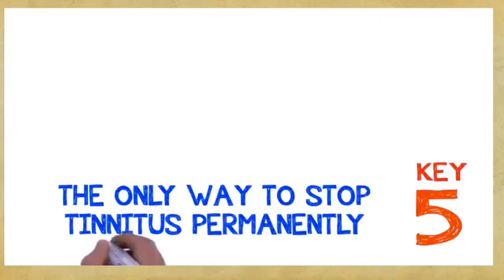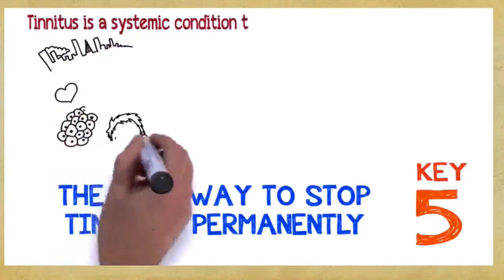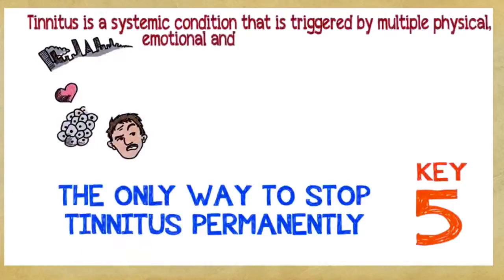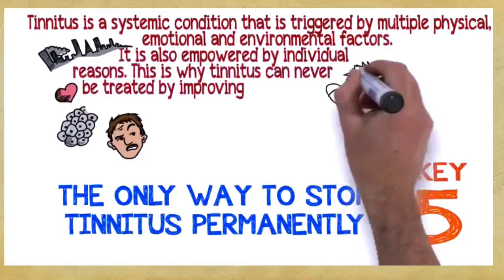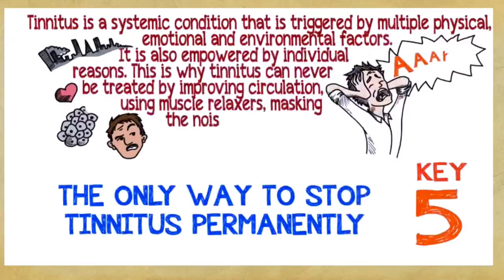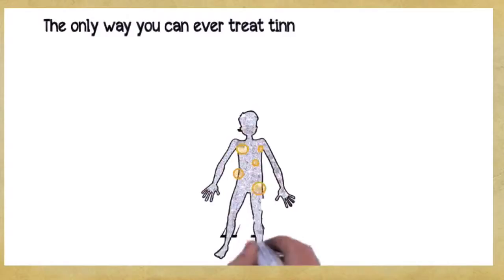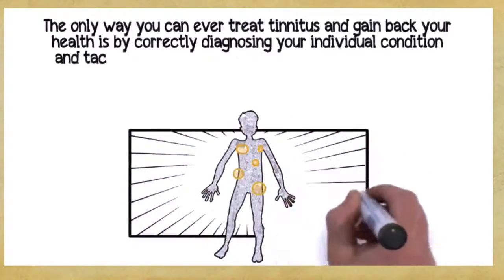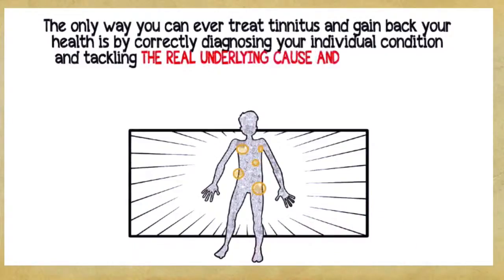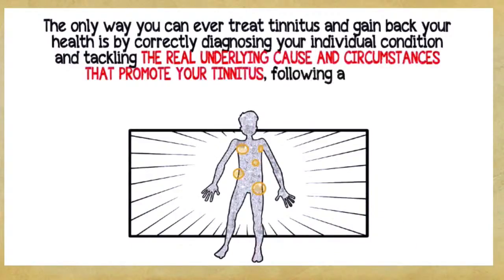Key number five. The only way to stop tinnitus permanently. Tinnitus is a systemic condition that is triggered by multiple physical, emotional, and environmental factors. It's also empowered by individual reasons. This is why tinnitus can never be treated by improving circulation, using muscle relaxers, masking the noise, or cutting a nerve in your auditory system. The only way you can ever treat tinnitus and gain back your health is by correctly diagnosing your individual condition and tackling the real underlying cause and circumstances that promotes your tinnitus, following a complete, multi-dimensional, holistic program.